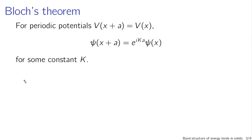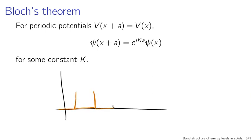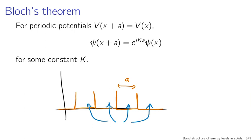We don't know anything necessarily about this constant K. But applying Bloch's theorem to our Dirac comb potential — atoms spaced apart by some distance a — tells us that the wavefunction in one region gives us the wavefunction in the next region, and the next. So we don't need to worry about the entire space; we can focus on just a sub-portion. This is very useful.